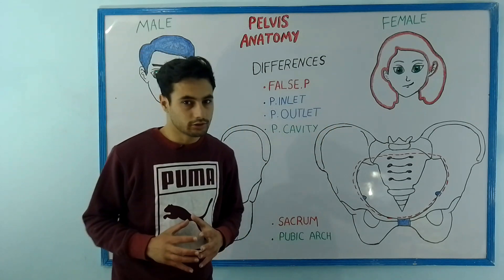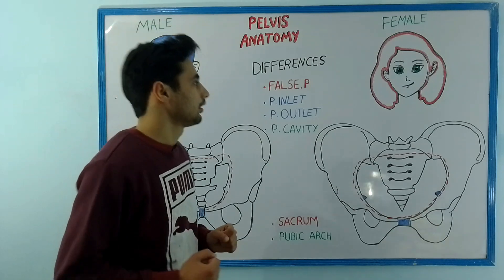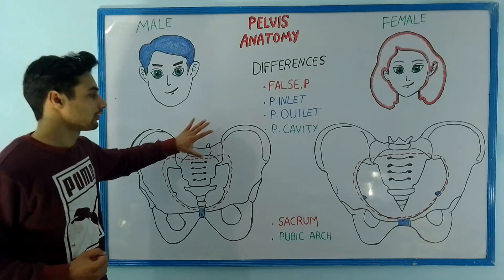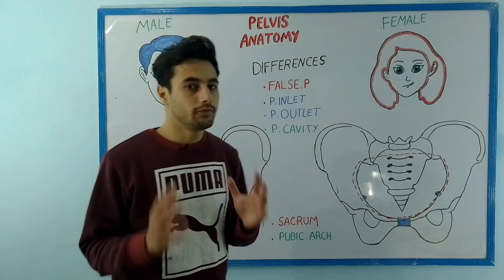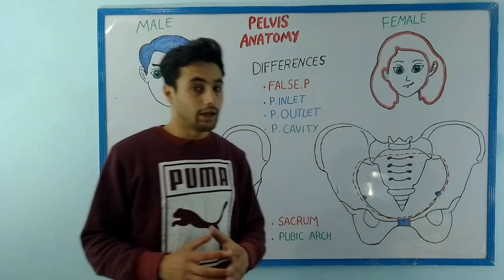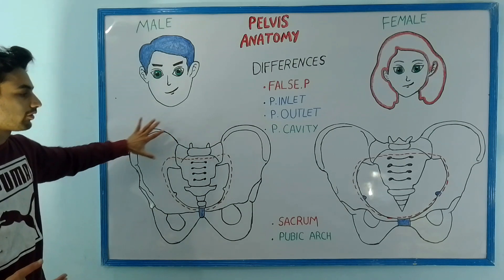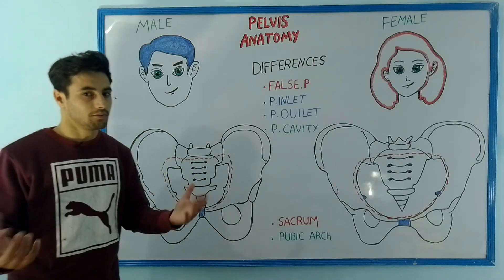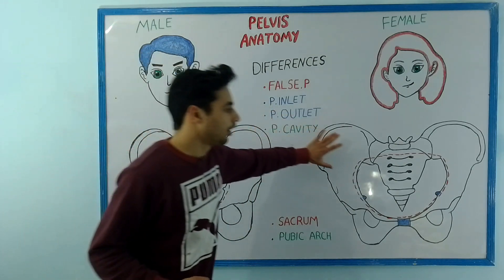Now we are ready to discuss about the biological difference between the male pelvis and the female pelvis. Have a look at the pelvis of the female and the pelvis of the male. The biological differences are very obvious in these bony structures. The female pelvis has obvious adaptations for childbirth, but in case of the male pelvis we have thicker bones and prominent bony markings.